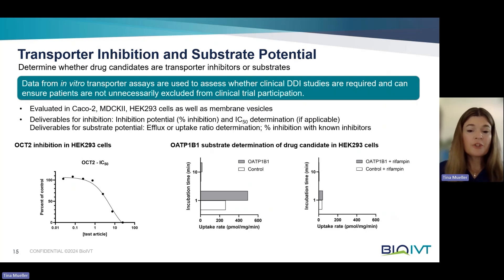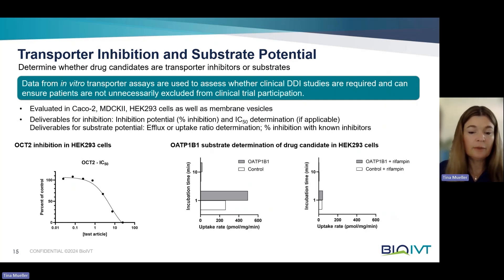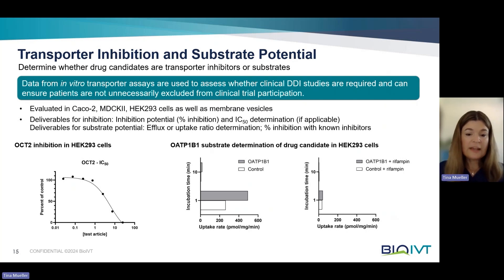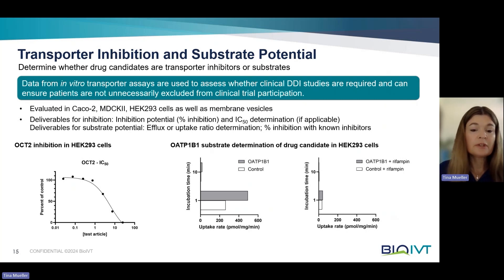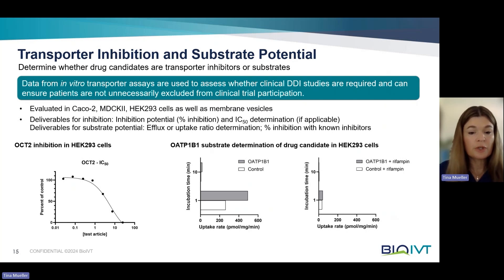The deliverables for inhibition are the percent inhibition, and an IC50 is determined if possible — you can see an example with OCT2 here on the left, with test article concentration on the x-axis and percent activity on the y-axis. For substrate potential, the efflux or uptake ratio — depending on the transporter type — is determined, as shown in the middle panel for OATP1B1. It is also tested how a known inhibitor affects the movement of the drug candidate, showing whether it is reduced, as seen on the right where the uptake rate is lower compared to the middle panel.